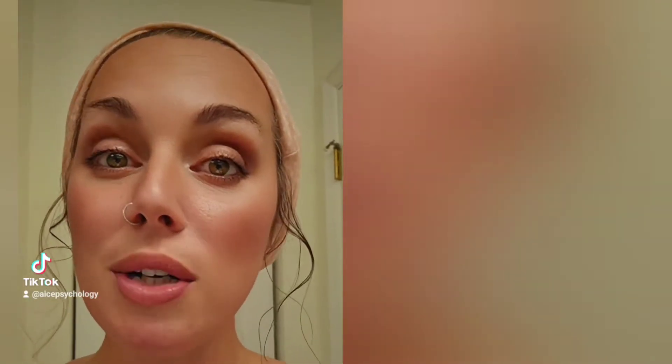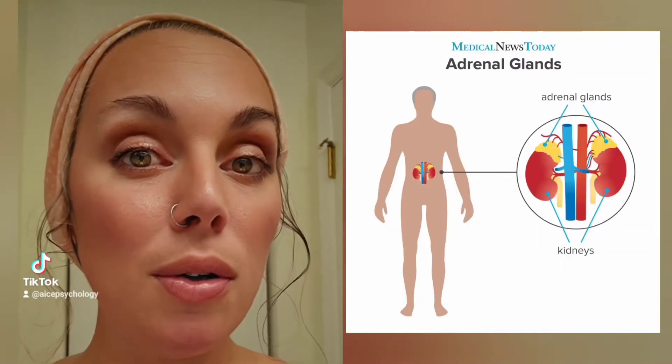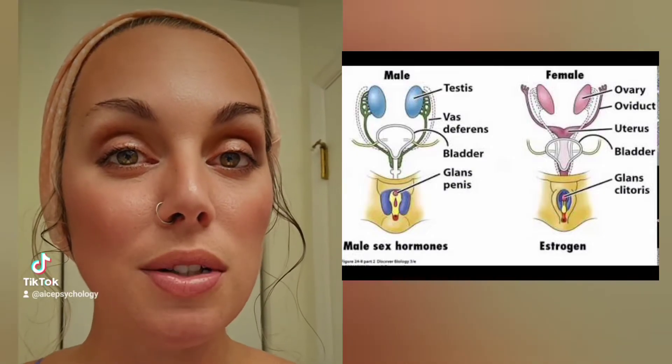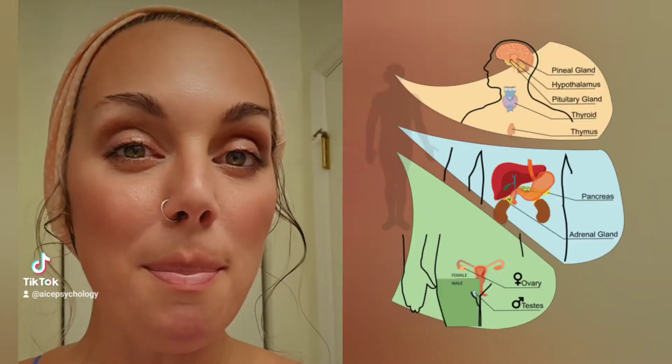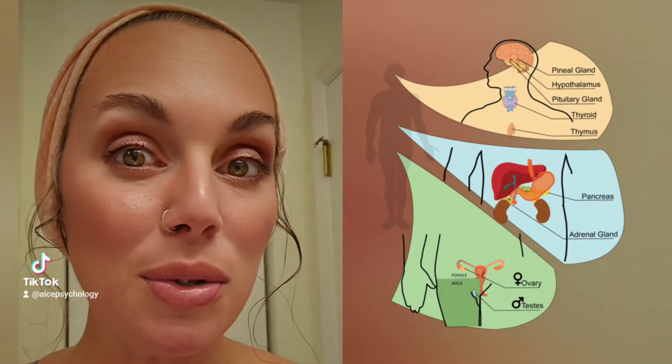Hormones are also used to communicate within the body. Chemicals are released into the bloodstream from glands such as the adrenal gland, and they may produce a chemical like adrenaline in response to fear. Some glands, like the testes or the ovaries, release hormones like testosterone or estrogen. The body is literally sending very short, rapid messages all over the place in order to release these chemicals when needed.